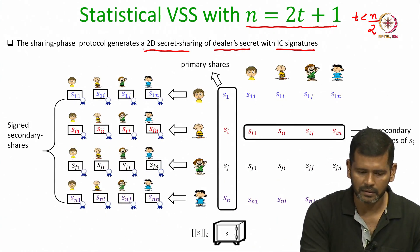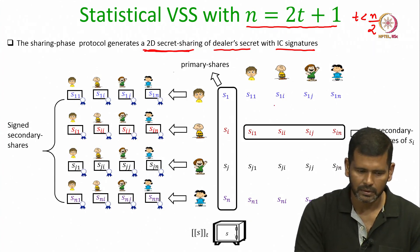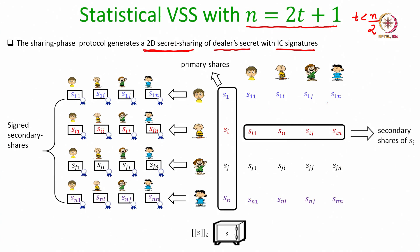To recap: a value S is said to be 2D secret shared with IC signatures if you have a set of primary shares lying on a t-degree polynomial with IC signatures, and each primary share S_i is further secret shared through a t-degree polynomial. The shares for primary share S_i are called secondary shares. So party P_1 will have secondary share S_i1, P_2 will have secondary share S_i2, the j-th party will have S_ij, and the n-th party will have secondary share S_in for the primary share S_i.